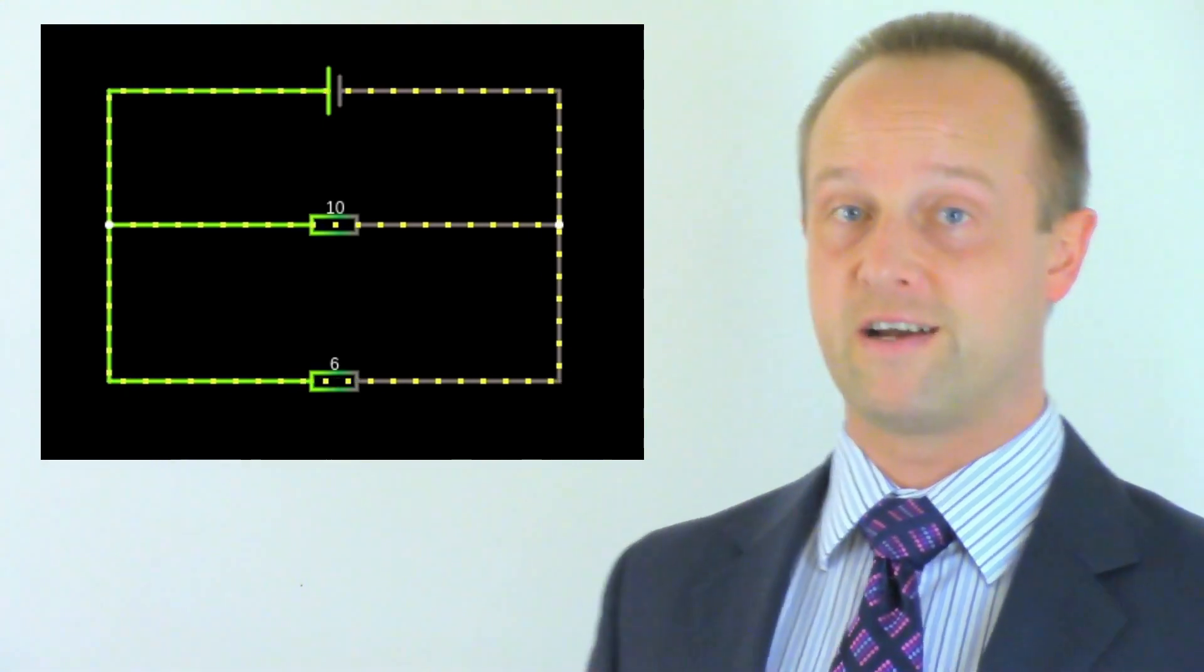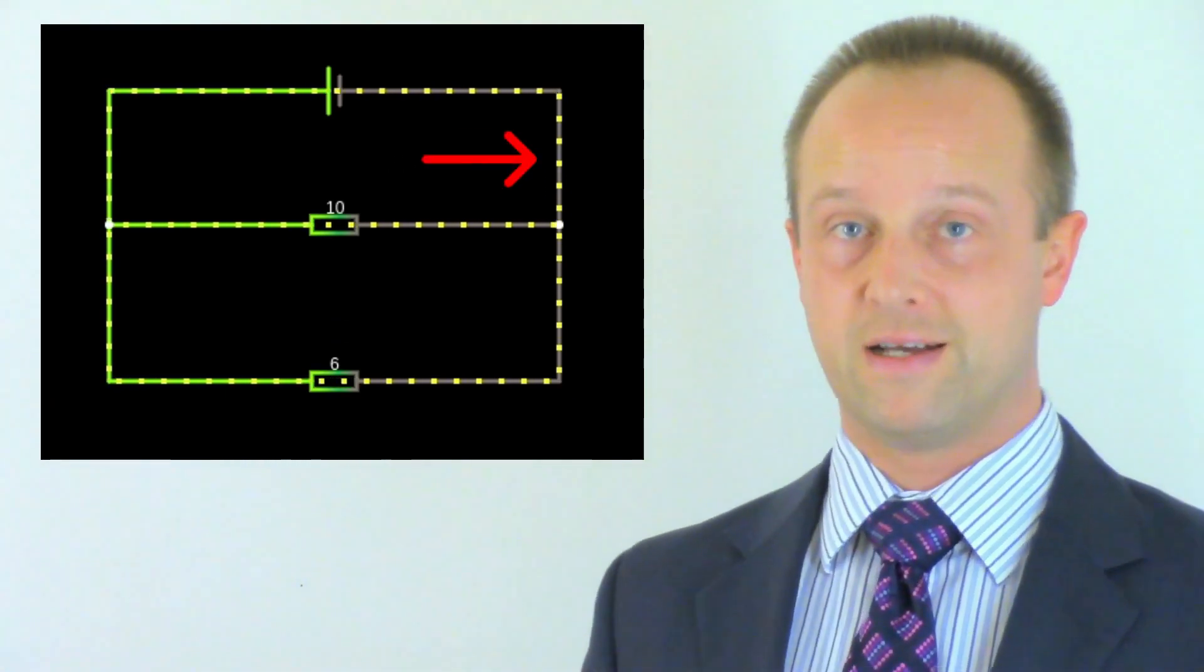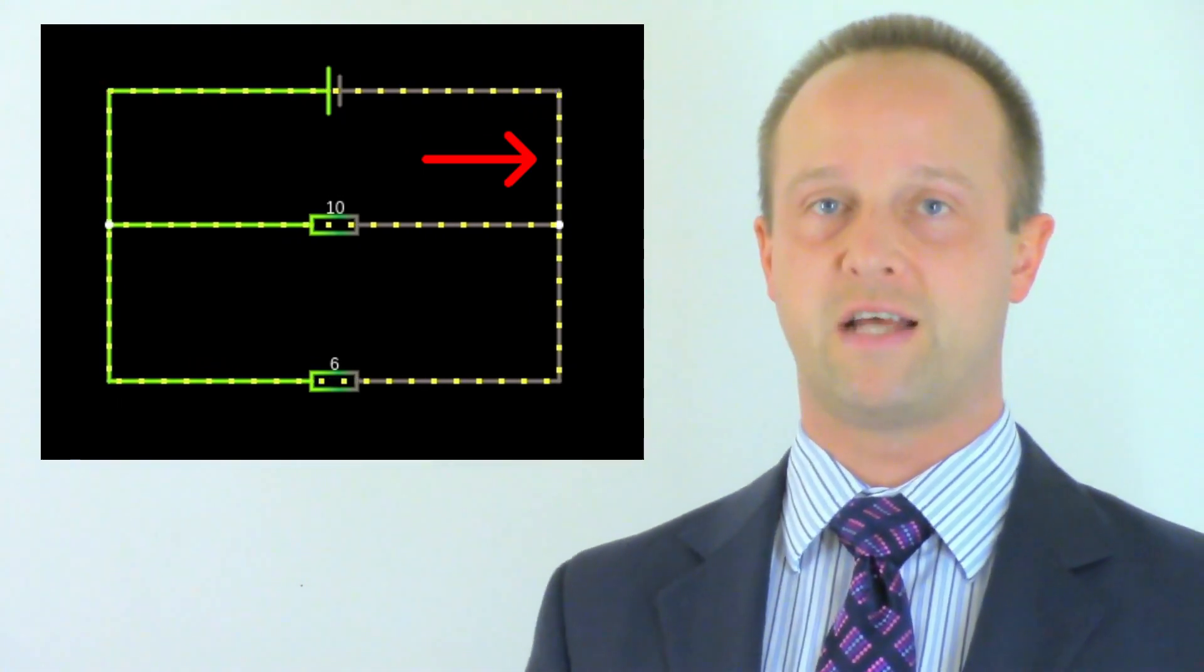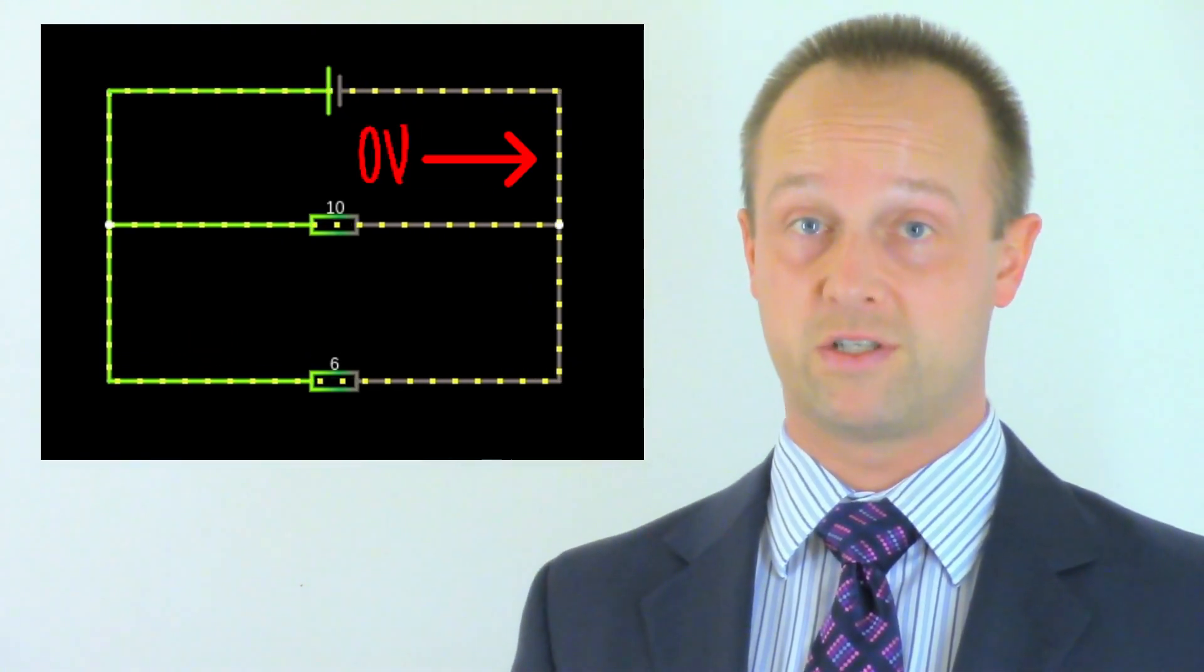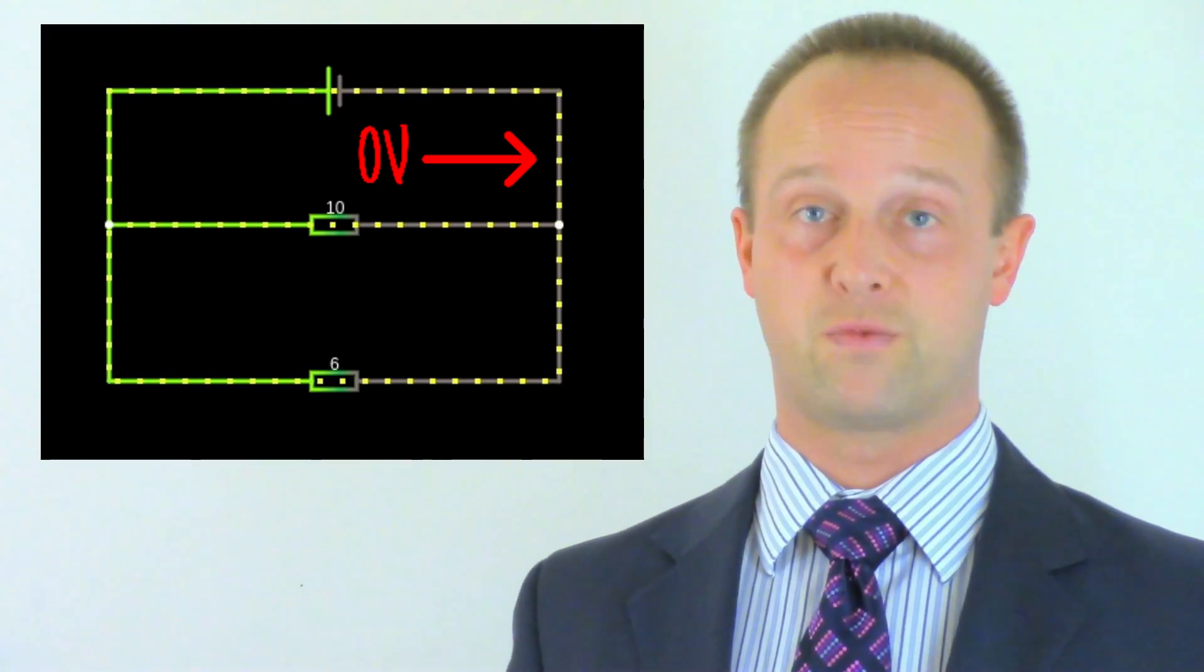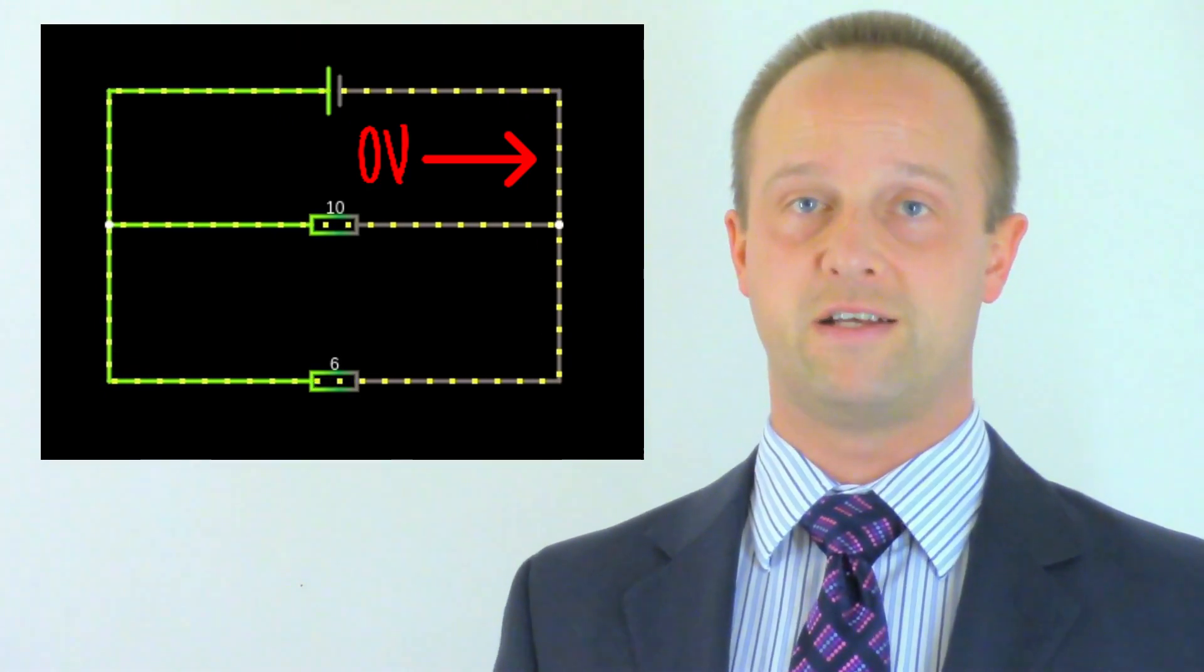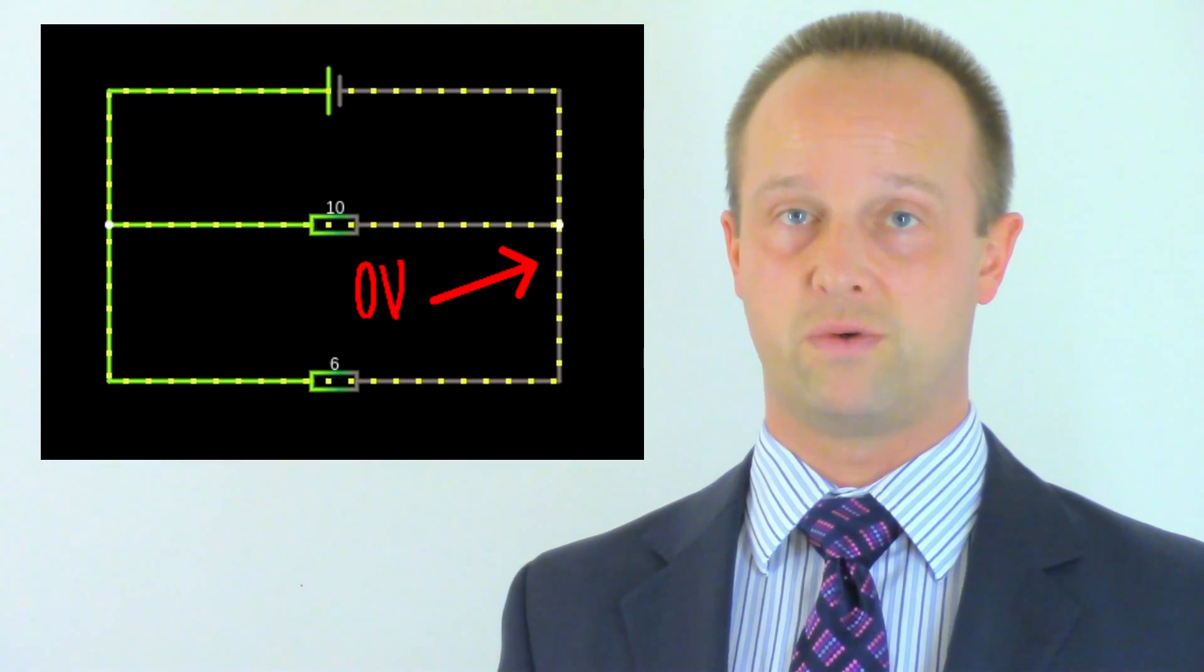Just like with the other side of the circuit, the wires connected to this side of the power supply, as highlighted here, are all at the same potential of zero volts too. All of our potential energy is used travelling through the components, or going back to our analogy, all of the energy is used by the cars travelling along the bumpy sections of road.